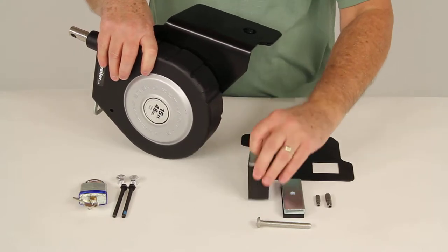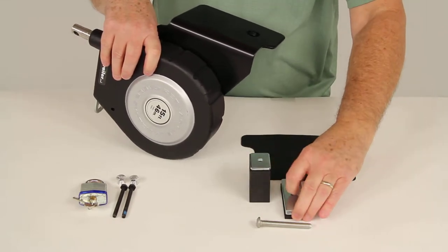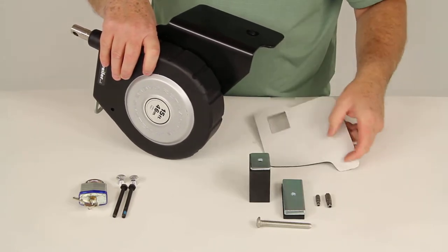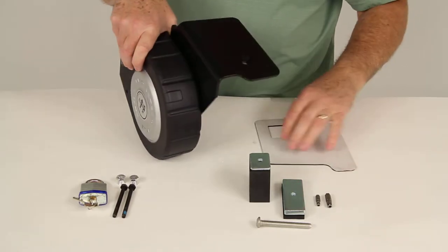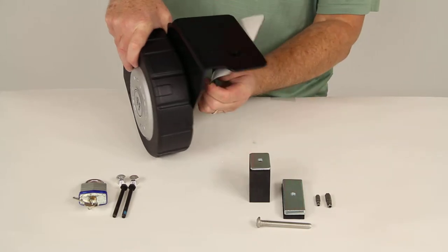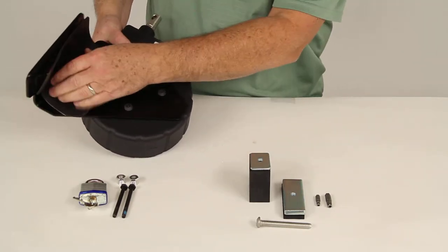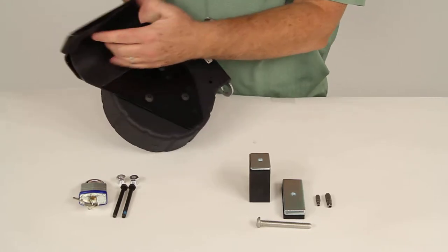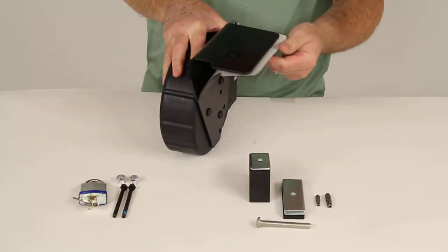The rubber pad right here underneath fits under the mounting bracket to protect the bed rail. They also have this rubber pad here that has an adhesive backing that you can peel off and put on here. When you go to put this on, you can put it on just like that. That will also protect the finish of your truck bed when you mount this to it.